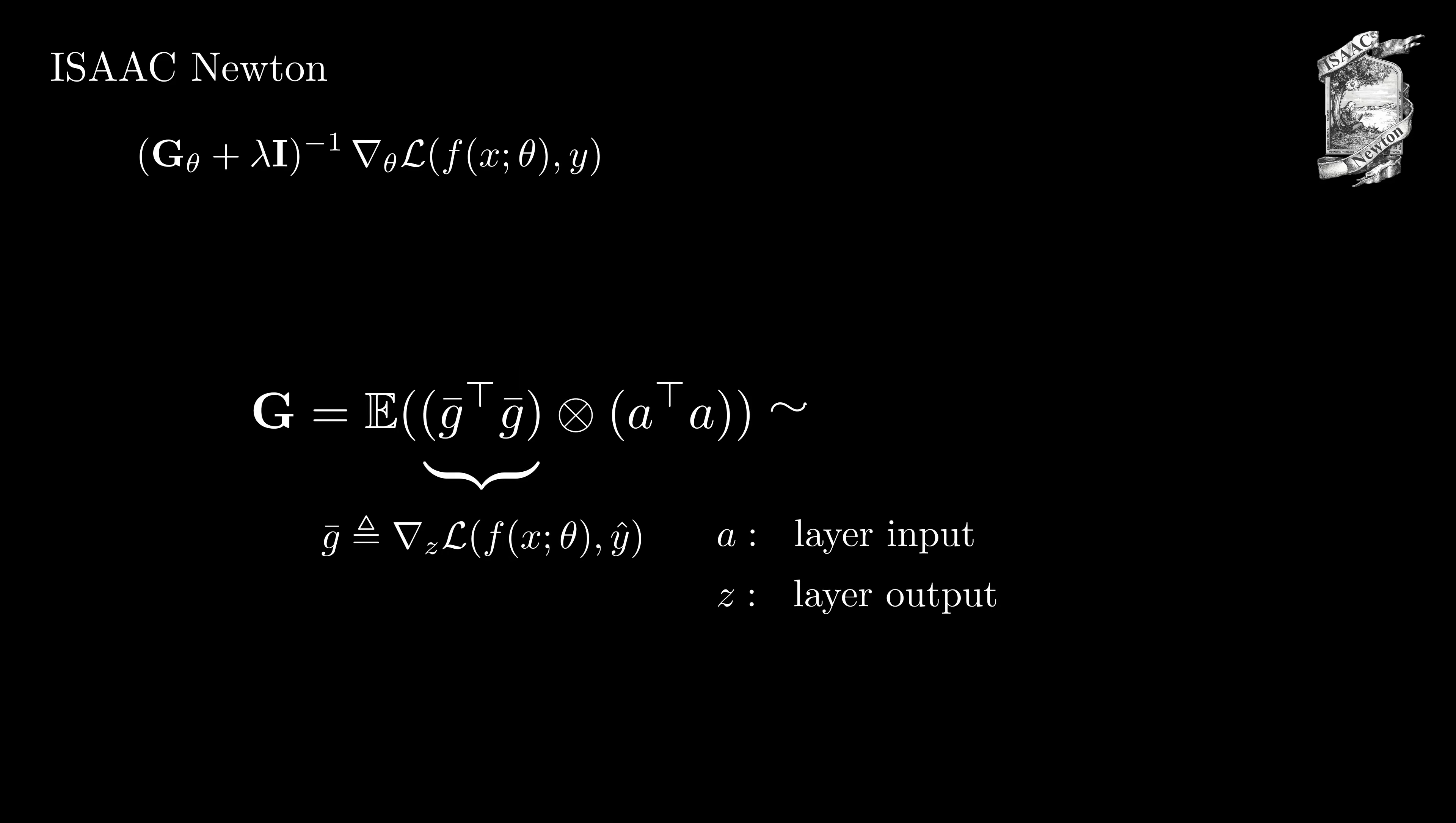As this matrix is expensive to compute, a popular approximation is the KFAC approximation, which approximates the expectation of Kronecker products by the Kronecker product of expectations. Note that the use of Kronecker products itself is not an approximation and that the KFAC approximation arises from interchanging the order of Kronecker product and expectation.